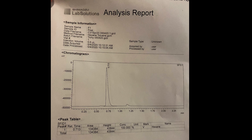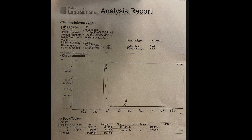As promised from the previous video, I'll share the data for fractions 1, 2, 7, 9, and 10. The GC trace for fraction 1 shows that it was 100% hexane, with a retention time of 0.713 minutes for hexane. Fraction 2 contained 94.7% hexane at 0.707 minutes, and 5.3% toluene at 1.157 minutes.